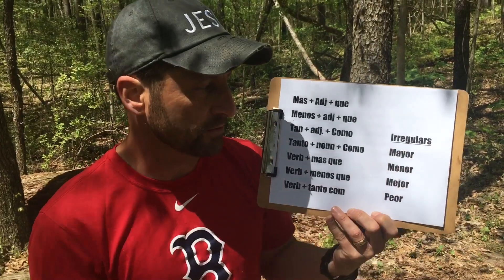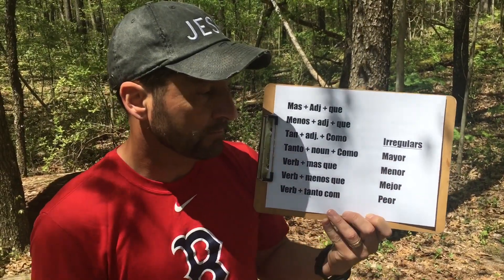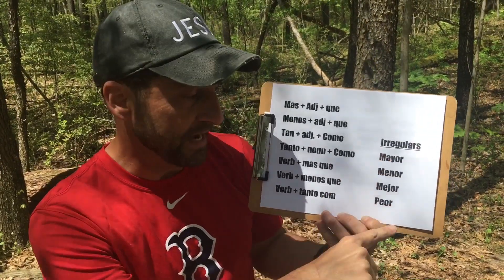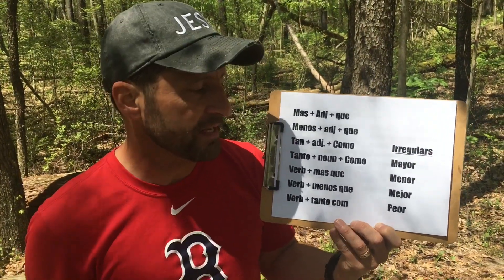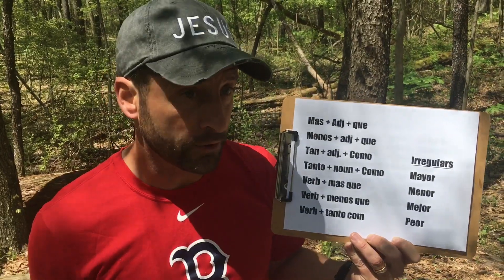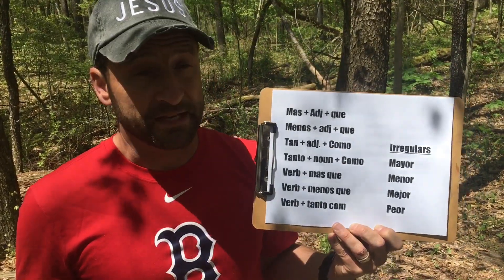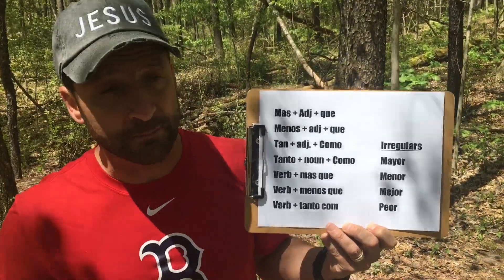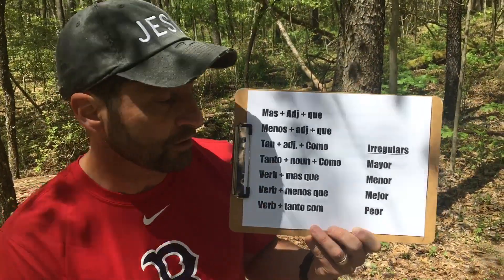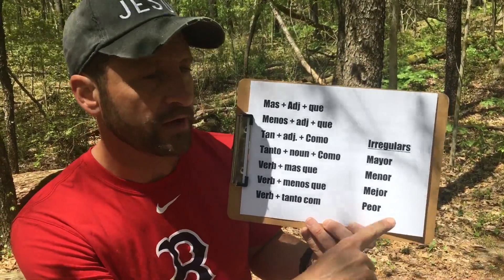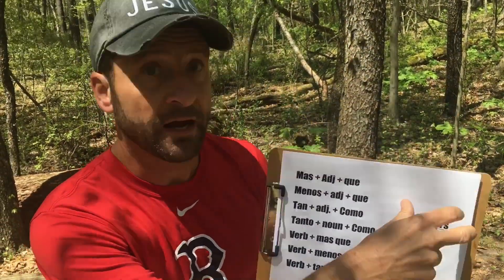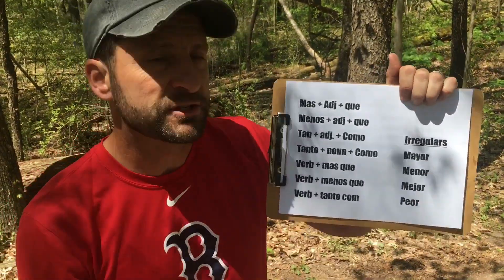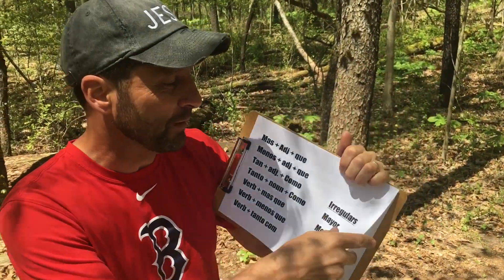Don't forget the irregulars. If somebody's older, it's mayor. If somebody is younger, they're menor — like a minor, and like the mayor of the town. If somebody is better, it's mejor. And somebody is worse, it's peor. Like, my grade in algebra is worse than my grade in history — mi nota en algebra es peor que. Peor is like 'poor' — I have a poorer grade. That's a good way to remember it.